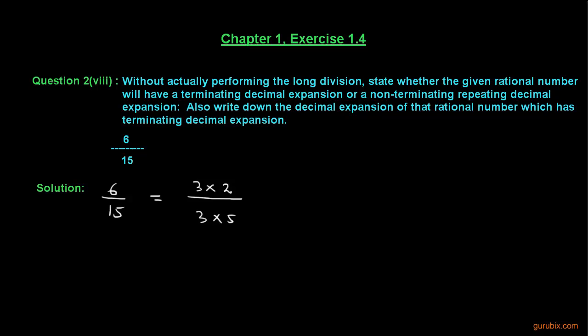So what we observe here, we see that 3 is the common factor both of numerator and denominator. So we can cancel out this 3 from here and this 3 from here and now we get 2 over 5.